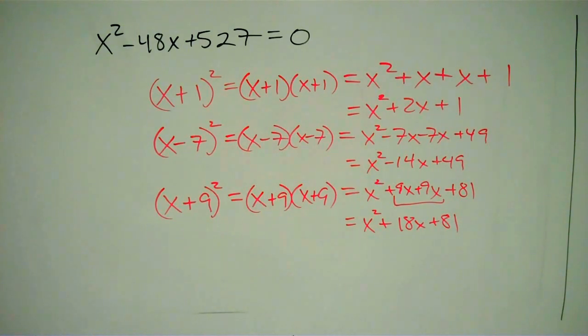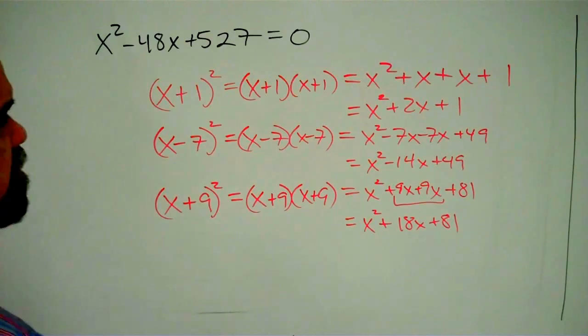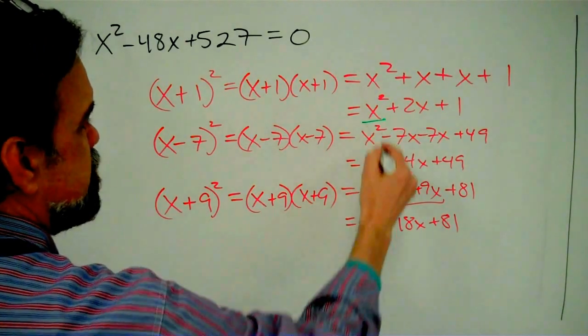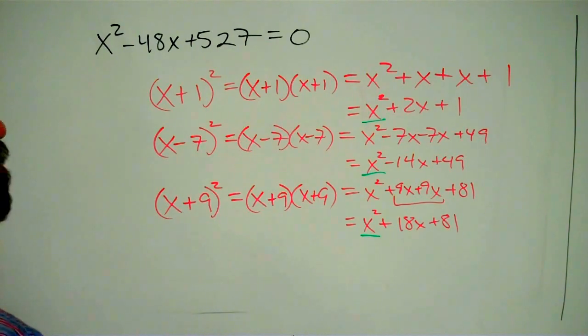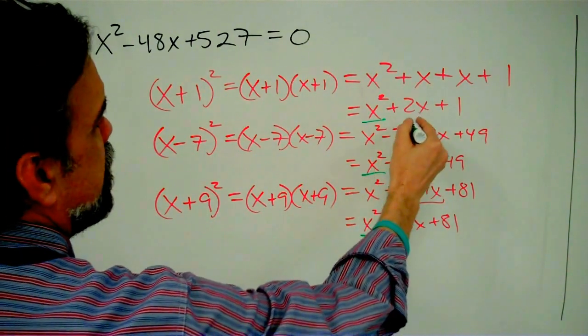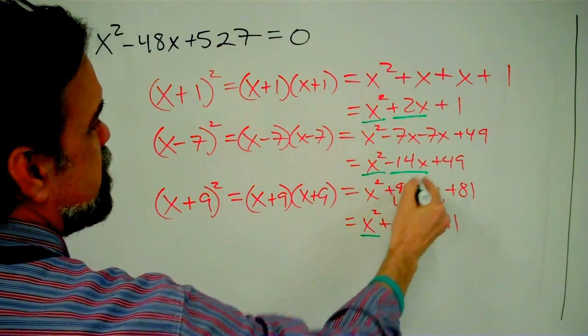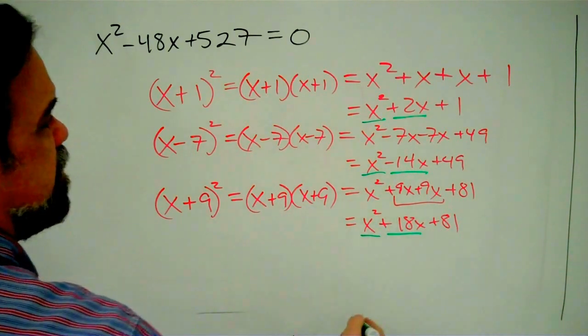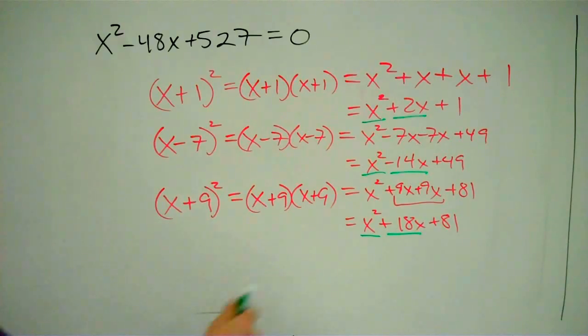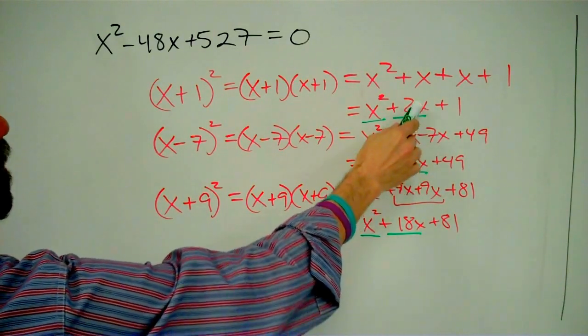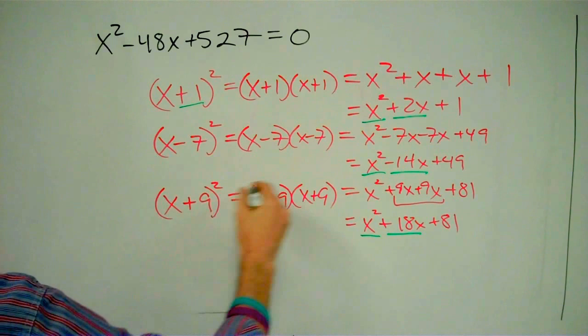Okay, let's look at the patterns that are going on here. We always have three terms. The first term is x². That's easy enough. The second term, in this case, 2x, -14x, +18x. If we look at how this relates to our original binomial that was squared, the coefficient that goes with x, 2 is 2 times 1, -14 is 2 times -7, 18 is 2 times 9.